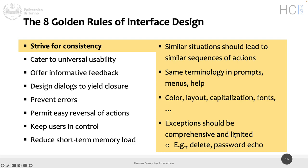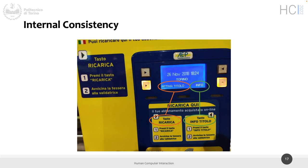Today we continue speaking about the eight golden rules of interface design with examples. Yesterday we stopped speaking about consistency, and we mentioned that consistency is something good that we want to exploit. We can have various kinds of consistency, such as internal consistency. So, is this a good example or a bad example of consistency?